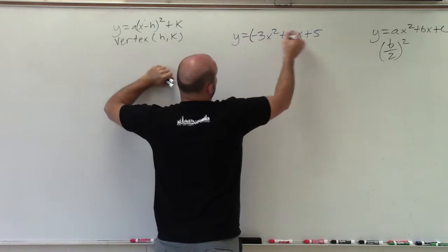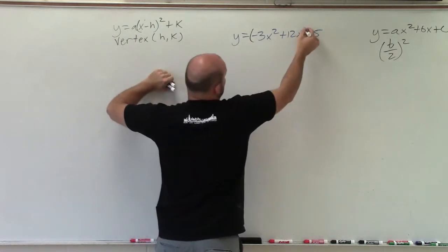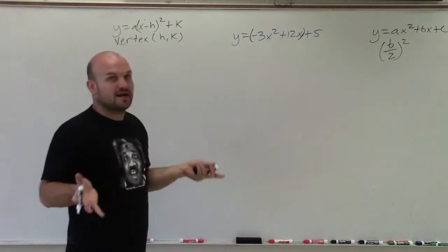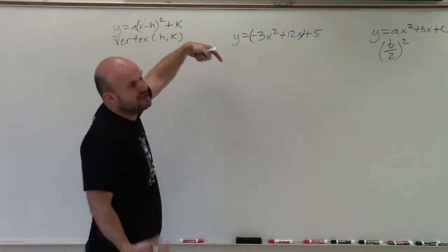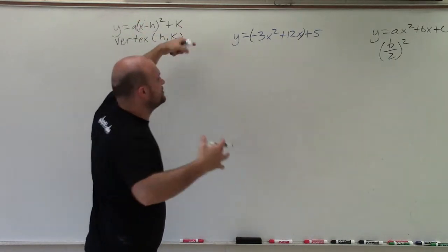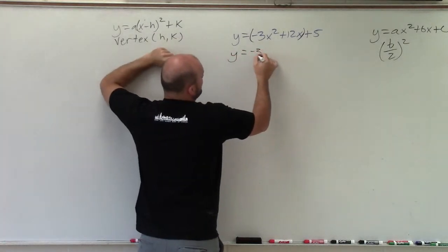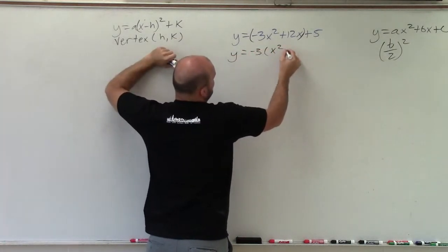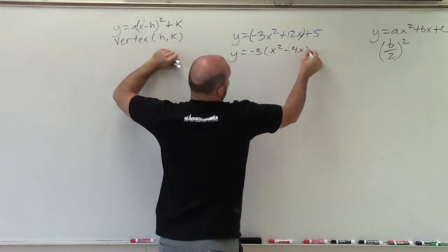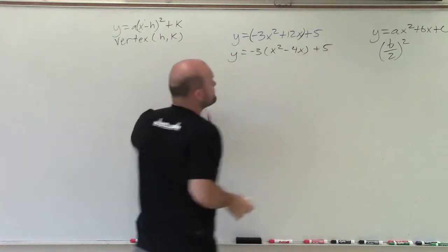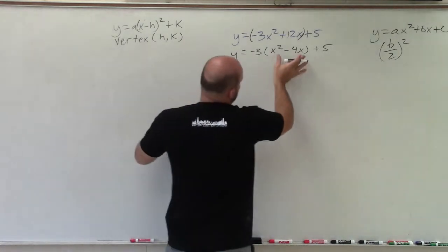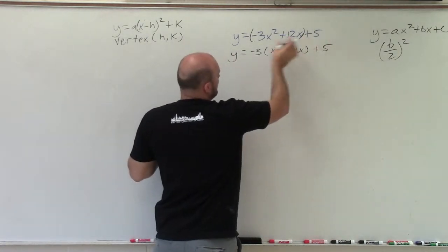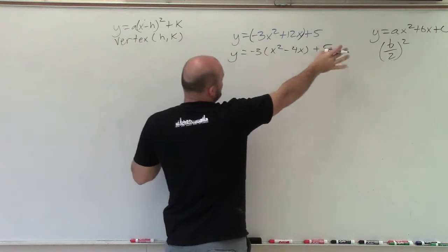When I factor out the negative 3, I'm only going to factor it out of my first two terms, because those are the two terms that I only care about, because I want to complete the square. And I'll show you how we're still going to apply that. So take y, factor out a negative 3. So I'm left with x squared minus 4x plus 5. I have not changed the problem at all. All I did was factor out a negative 3 of the first two terms, and then kept the 5 on the outside.